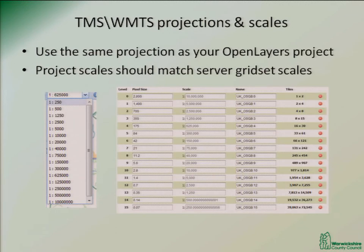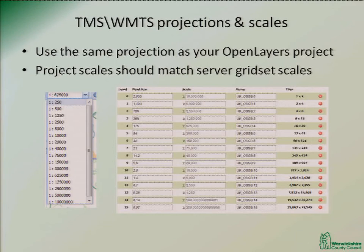Projections continue to be a pain. We basically have everything in British National Grid because that's easiest. The projection scales you use specifically for tiles in the OpenLayers application should be the same as the ones on GeoServer — if they're not, your tiles will end up somewhere else or get slightly misprojected, which they always do for me.